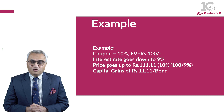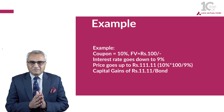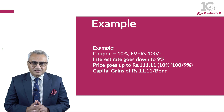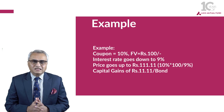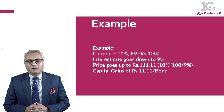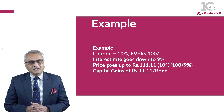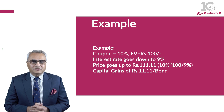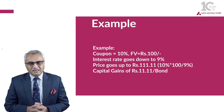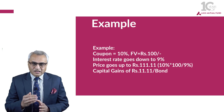If the interest rates go down to say 9%, then the underlying security's value is calculated as 10% × 100 ÷ 9%, which means the underlying security's value will go up to 111 rupees and 11 paisa. That means it will generate a capital gain of 11 rupees and 11 paisa, so when interest rates go down, the price of the bond goes up.